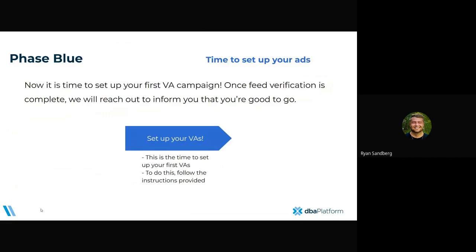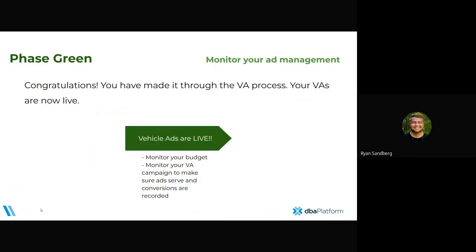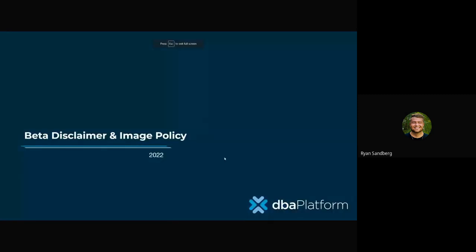Once we get your feed verified, you go into Phase Blue, where you set up the VA campaign — the budget and the smart shopping campaign. It's super easy. We do have documentation on it that we'll give you as well. Once you set up that campaign and the ads start to serve, you are then live in Phase Green. This is where you monitor your budget, monitor the campaign, make sure the ads continue to serve, and conversions are recorded.